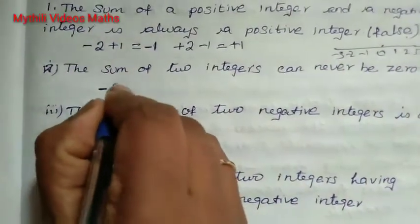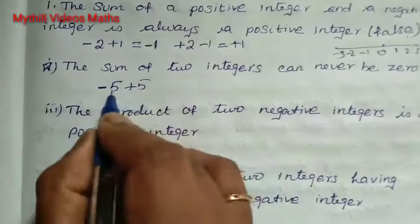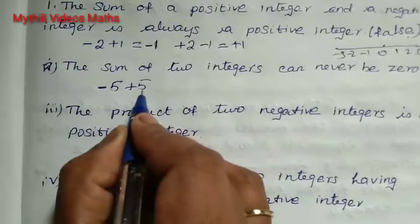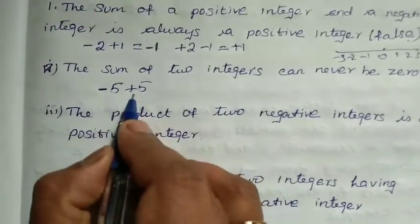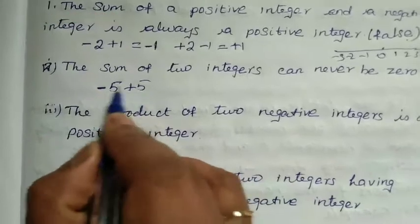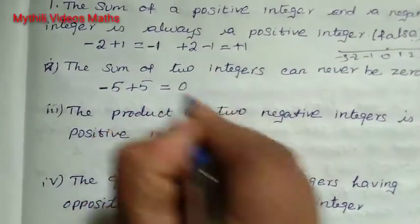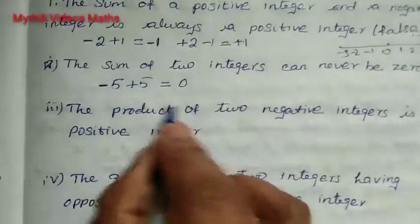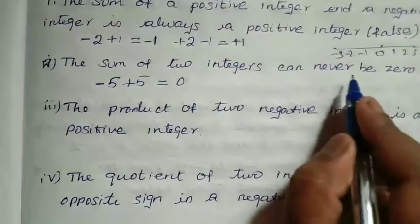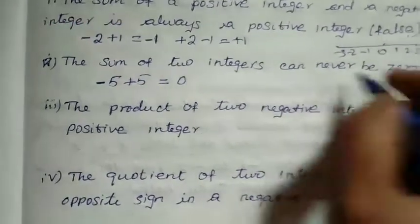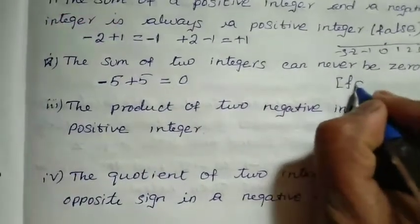Suppose I take minus 5 plus 5. These two are integer values. When we add them, plus 5 and minus 5 cancel each other and the value is zero. But they are telling it can never be zero.